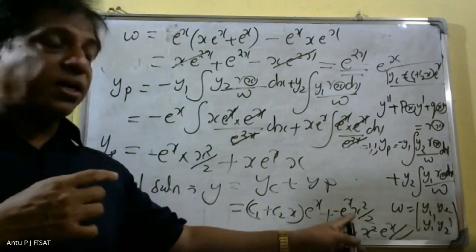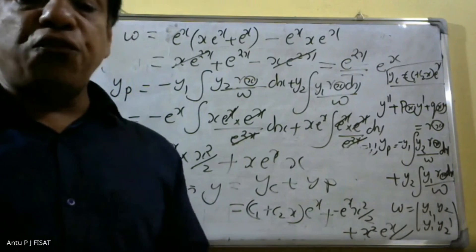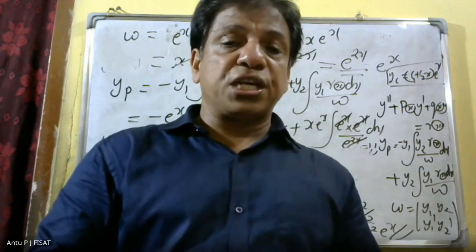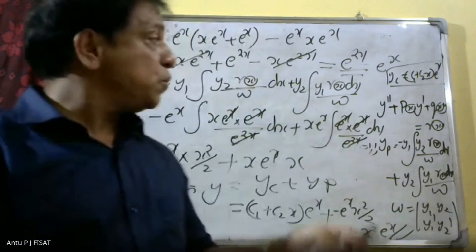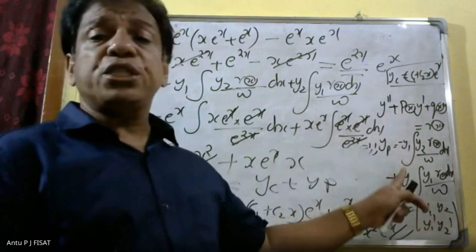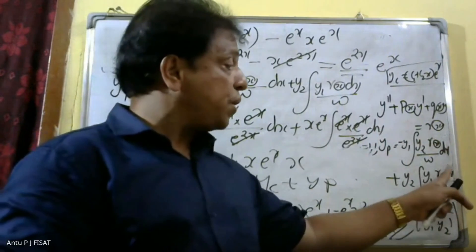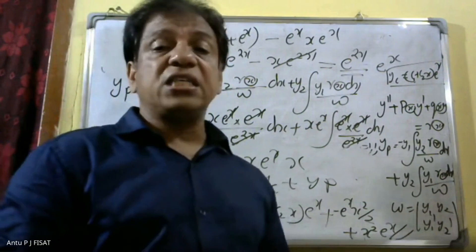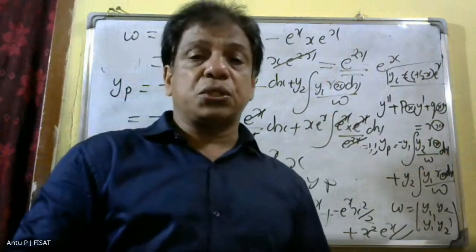We can simplify this further. This is the procedure to find the solution by using the method of variation of parameters. By using this method, we can easily solve second order non-homogeneous ordinary differential equations. To find y_p, we use the formula minus y1 integral of y2 r(x) by w dx plus y2 integral of y1 r(x) dx by w, and the Wronskian w is the determinant of y1, y2, y1 dash, y2 dash. The general solution is y_c plus y_p.